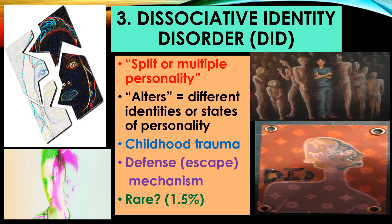Another dissociative disorder is called dissociative identity disorder, or DID — what the public usually calls split personality or multiple personality. This is when a person has different alters, or alternate identities, different personality states that can change from one moment to another. This seems to be a defense mechanism based on childhood trauma. When the immature child's brain experiences trauma, they develop a different identity to escape. Statistics show it affects about 1.5% of the population, or about 15 out of a thousand people.